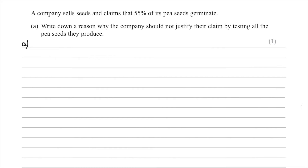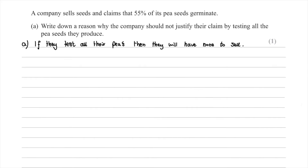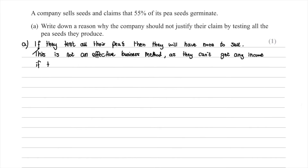If they test all their peas then they'll have none to sell, and this isn't really best practice for a business because they make money from selling products. So we'll say that if they test all their peas they will have none to sell — this is not an effective business method as they can't get any income if they've destroyed all their peas. This question was worth one mark, received for stating that the seeds would be destroyed during the process of checking them.